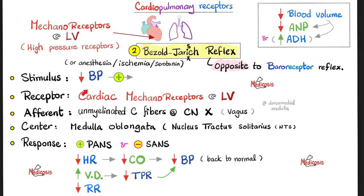Think of the Bezold-Jarisch reflex as the opposite of the baroreceptor reflex. For the baroreceptor reflex, the response to hypotension was tachycardia and vasoconstriction. But here we see the exact opposite: the response to hypotension is bradycardia and vasodilation. Bradycardia lowers cardiac output and lowers blood pressure. Vasodilation lowers total peripheral resistance and lowers blood pressure. Since we also have pulmonary receptors, they tend to decrease the respiratory rate. Why do we need the Bezold-Jarisch reflex? Because if left to the baroreceptor reflex alone, the response to hypotension might be an exaggerated hypertension — this reflex protects from that overreaction.